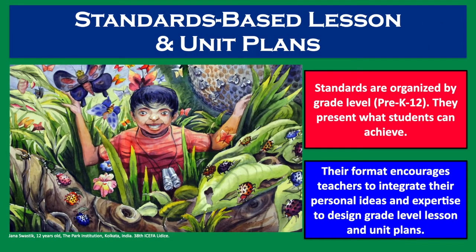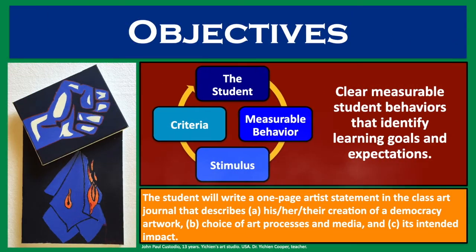Standards are organized by grade level and present what students can achieve. Their format supports teachers in incorporating their personal ideas and expertise to design grade-level lesson and unit plans. Objectives are clear, measurable student behaviors that identify learning goals and expectations. The model I developed for Teaching and Learning in Art Education consists of four parts: the student will, a measurable student behavior, a stimulus, and criteria. Here is a sample objective focusing on democracy and student inquiry: the student will write a one-page artist statement in the class art journal that describes their creation of a democracy artwork, choice of art processes and media, and the artwork's intended impact.